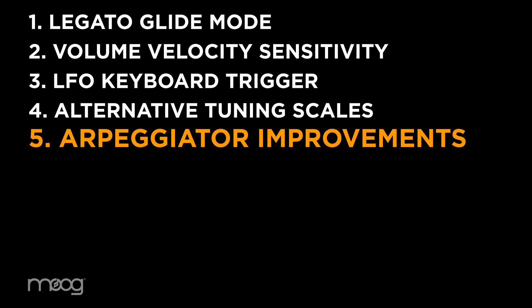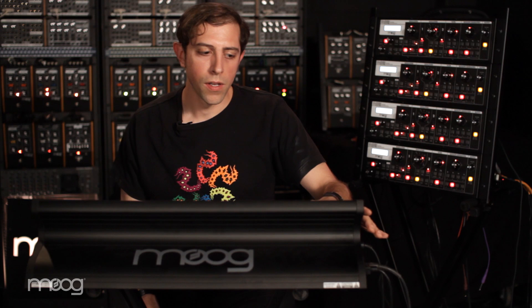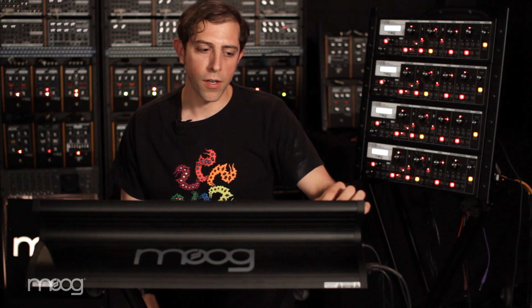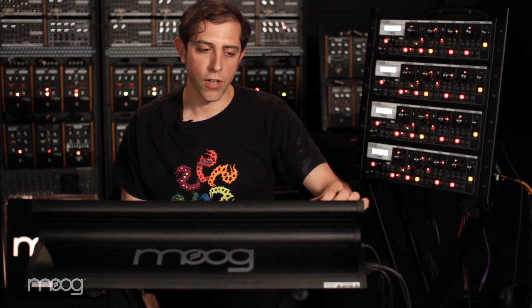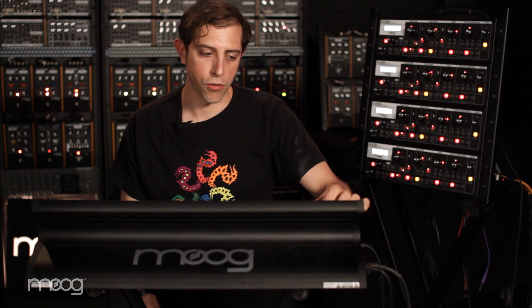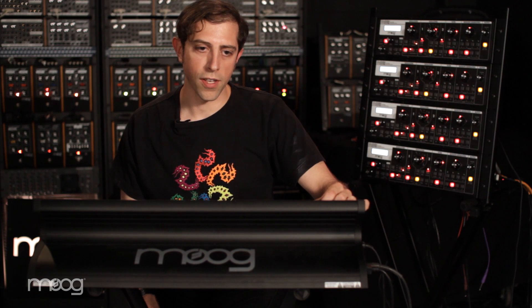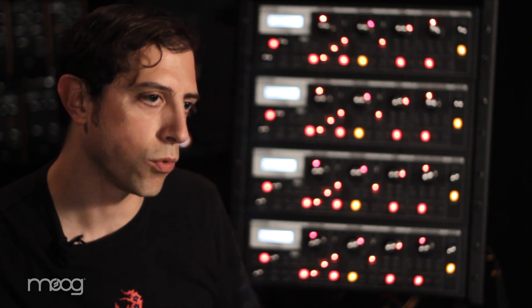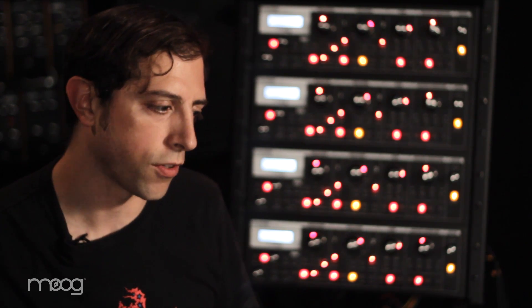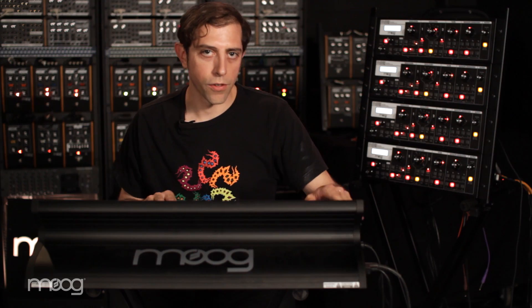New items you'll find on the Master menu include the Global Arpeggiator Setup menu. On the ARP Setup menu, you can change the clock source for the arpeggiator from internal to MIDI for all presets. You can also adjust the arpeggiator clock divisions, and a new parameter called Gate Length, which controls how long each note is within the arpeggiator's cycle. There are three options.